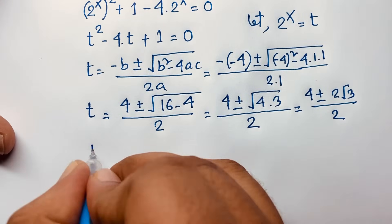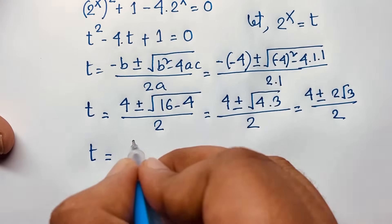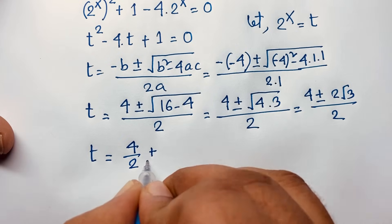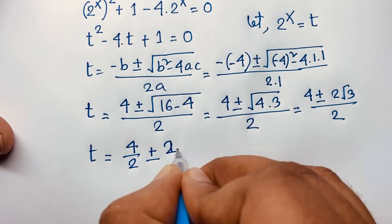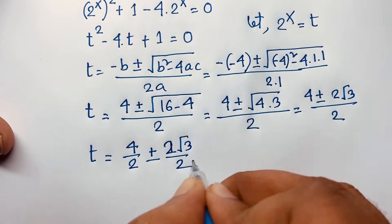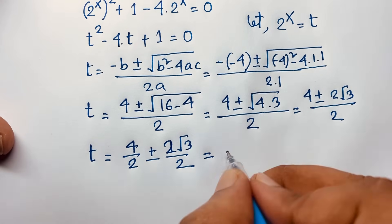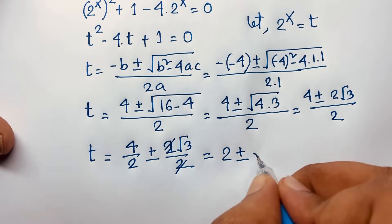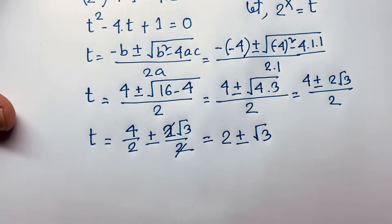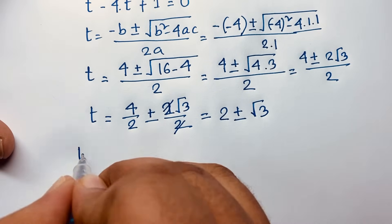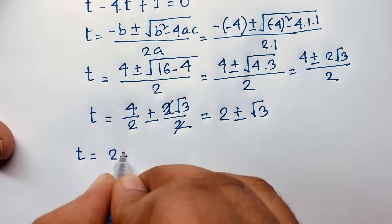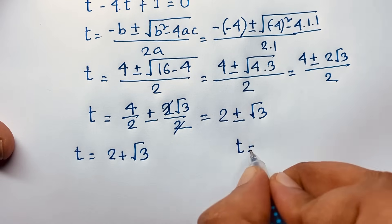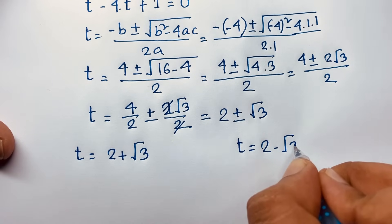Separating the fraction: t equals 4 over 2, plus or minus 2 square root 3 over 2. That simplifies to t equals 2 plus or minus square root 3. So t equals 2 plus square root 3, or t equals 2 minus square root 3. Both are real solutions — there are no complex numbers here.